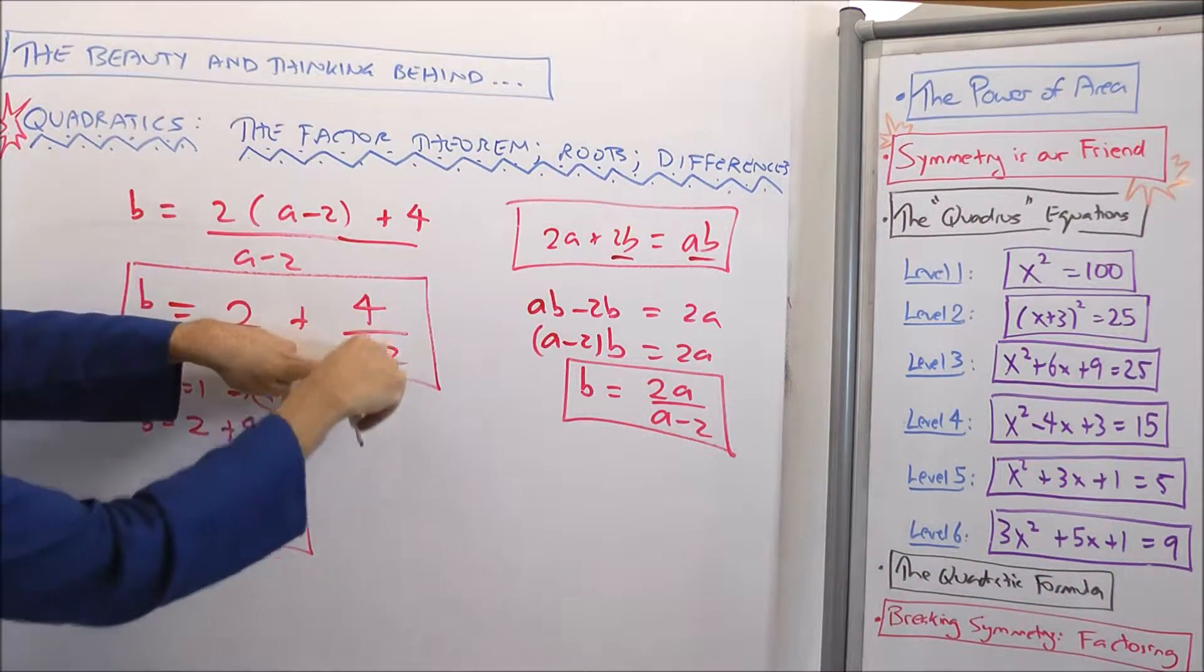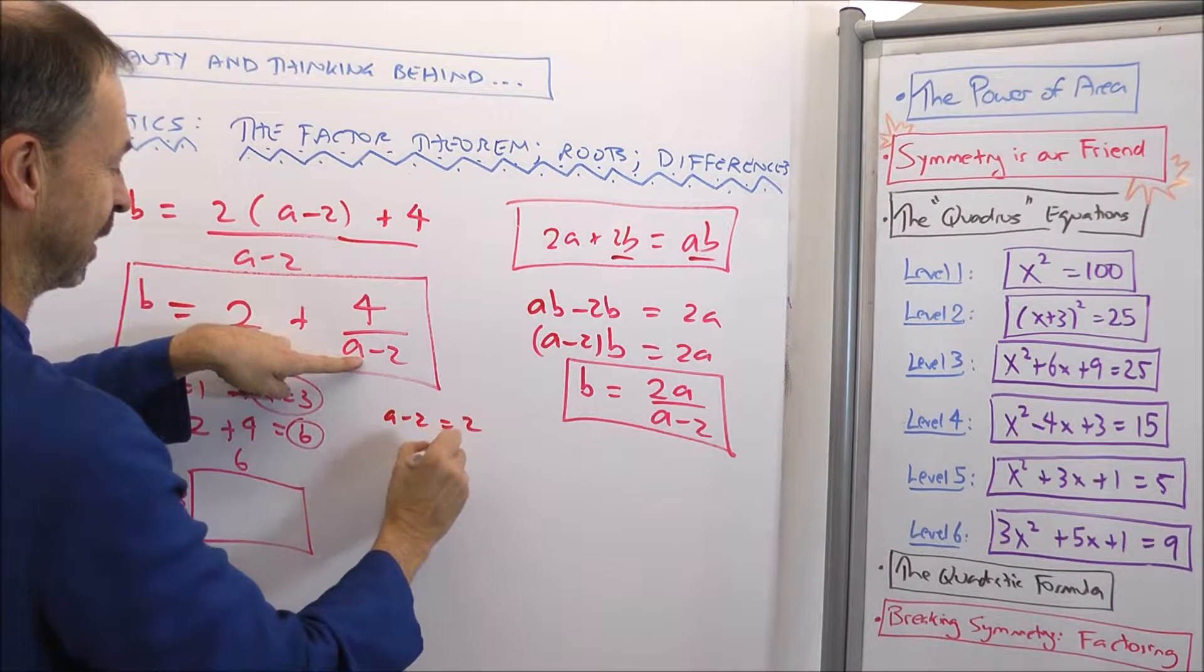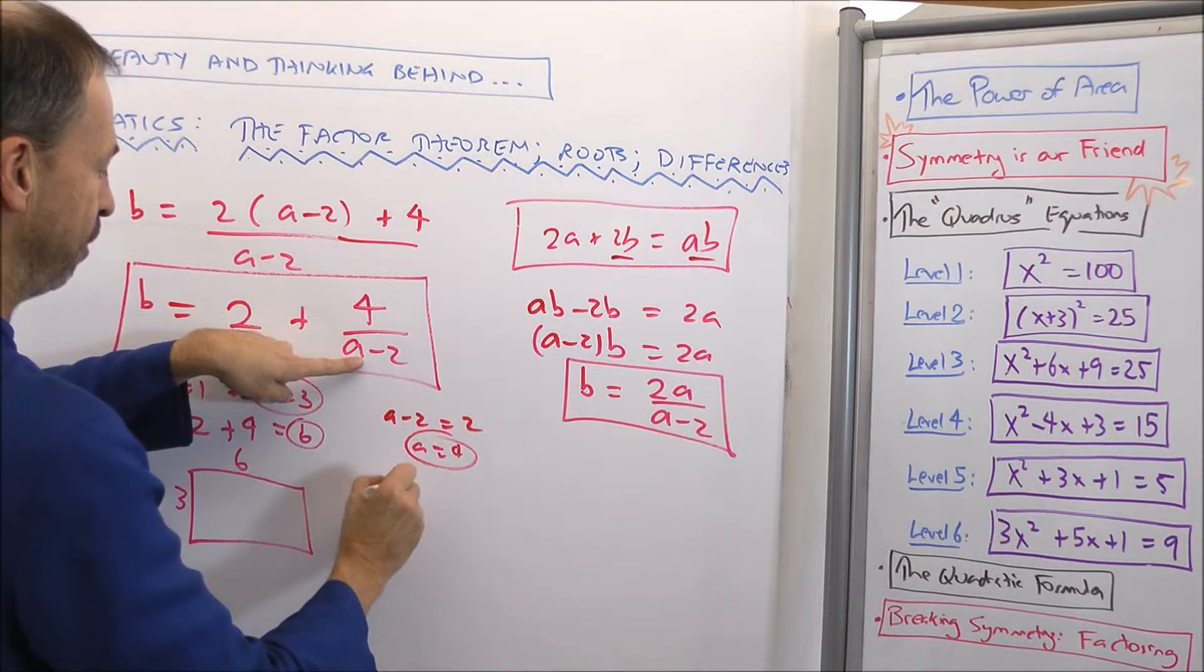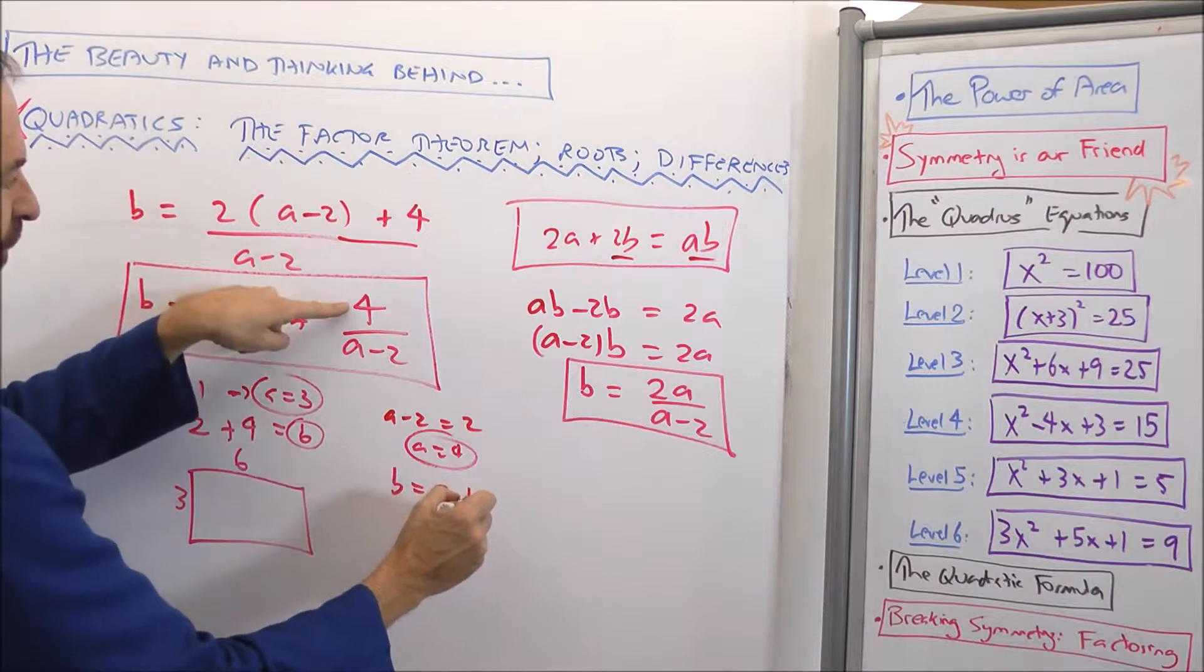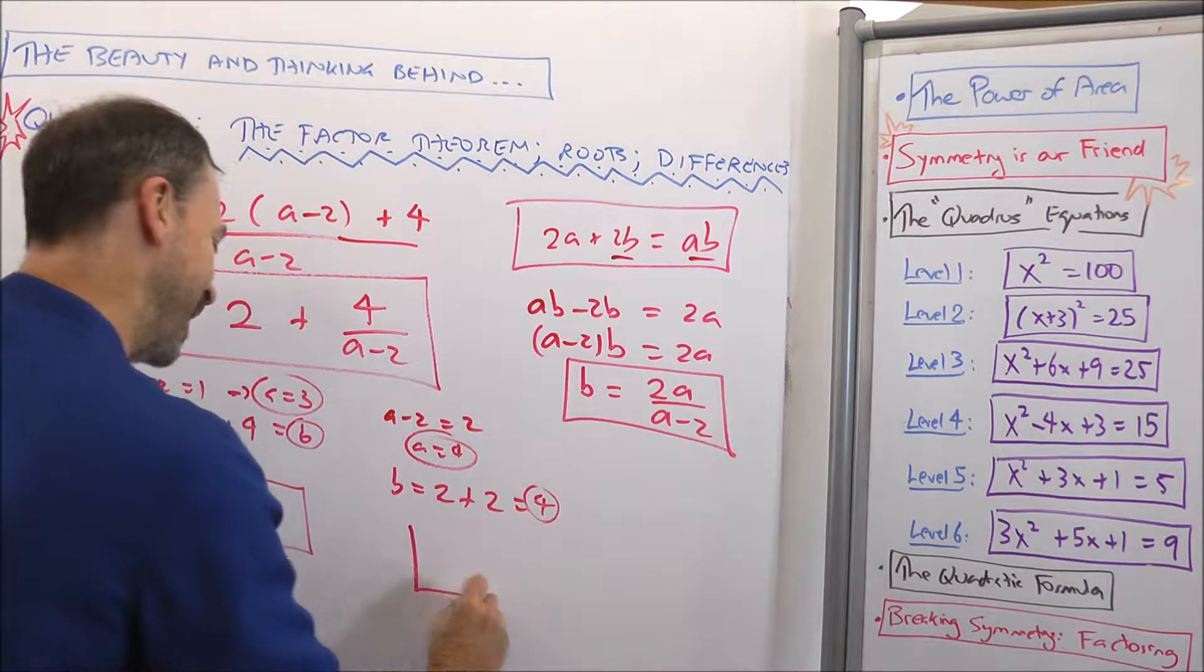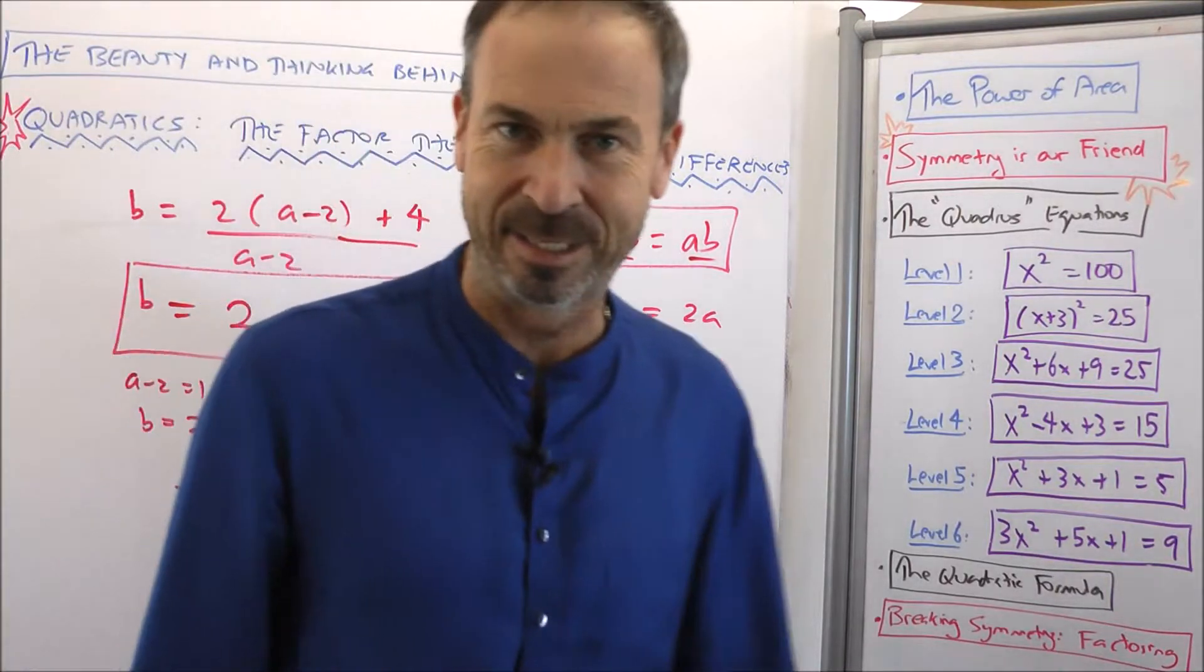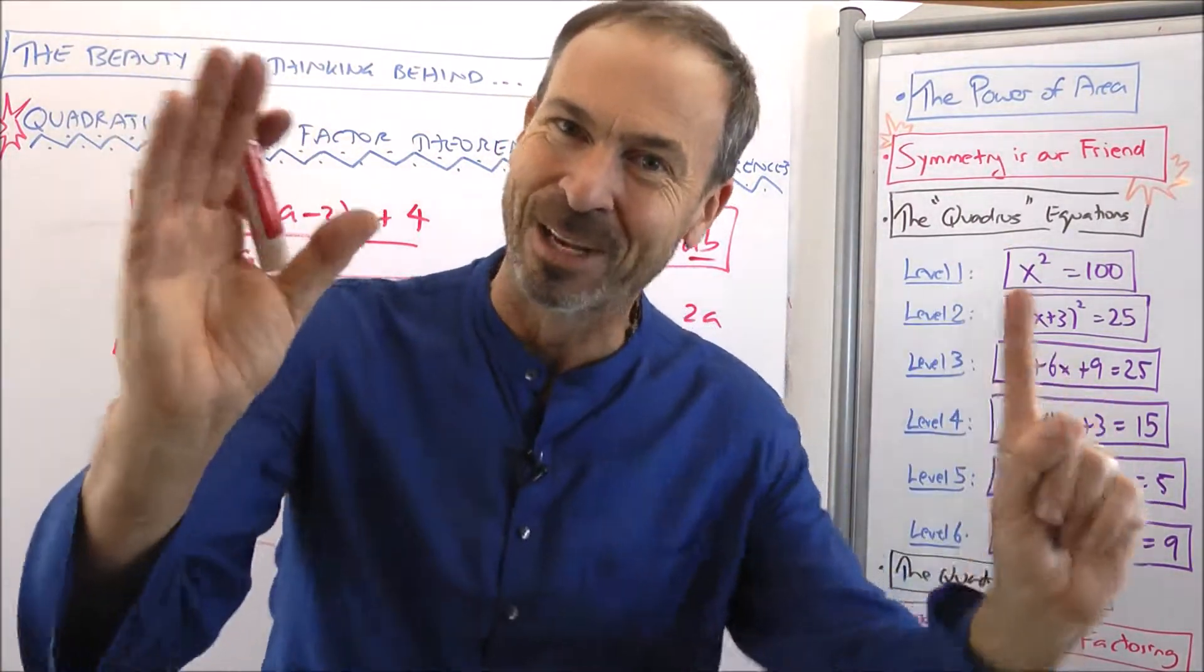Other possibility: maybe (a - 2) is the factor 2. (a - 2) = 2, which tells me a is 4. And b would then be 2 + 4/2, which is 4. Oh, that's the other example we had, a four by four square. Area and perimeter, the same numerical value. Looking good.